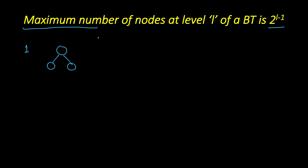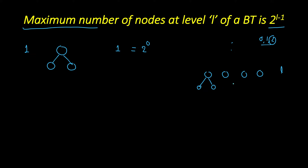The root is at level 1 and has one node, so 2 raised to the power 0, that is 1 minus 1. The maximum number of nodes doubles at each subsequent level, because if at some level we have 4 nodes, the maximum number of nodes at the next level occurs when each node has 2 children. A binary tree node can have 0, 1, or 2 children, so maximum is when each node has 2 children. If we have 4 nodes at level L, the next level can have at most 2 times 4, that is 8 nodes.